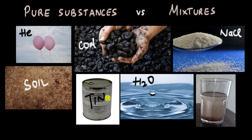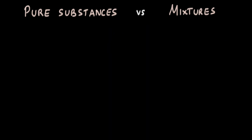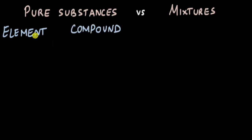By the end of this video we will be able to answer this question and categorize many more substances under either pure substances or mixtures. To do that we should clearly understand the difference between these two. A pure substance can be either an element or a compound. We know that elements can be metals, non-metals, even metalloids, and compounds are formed when two or more elements join together.